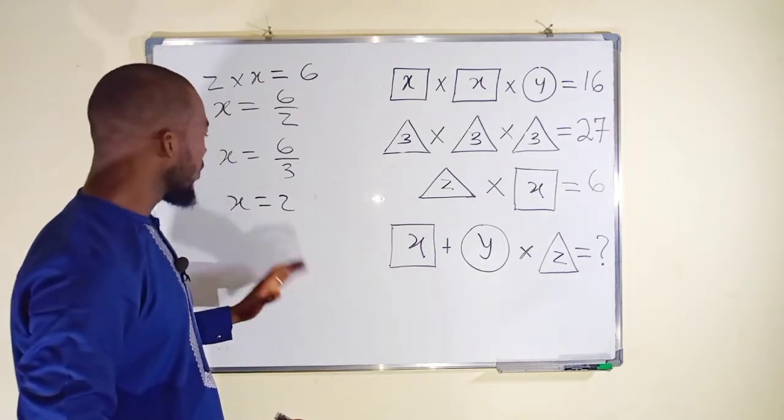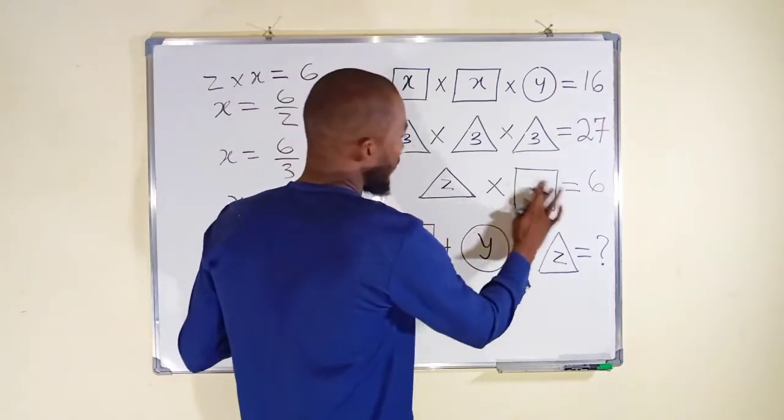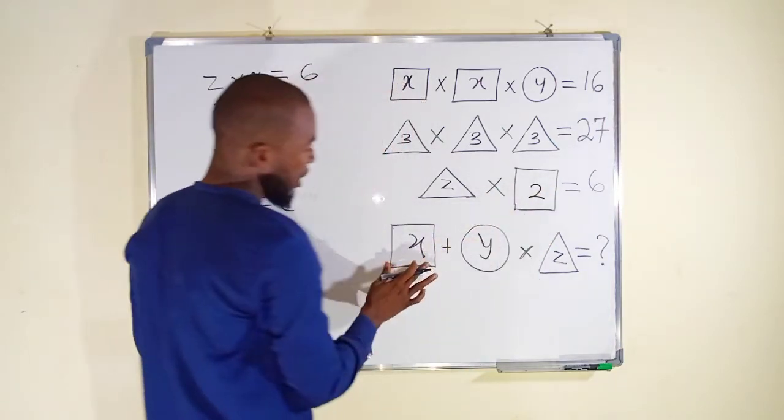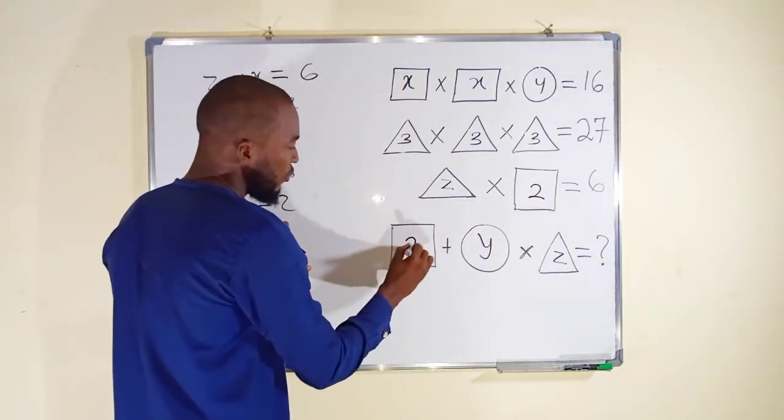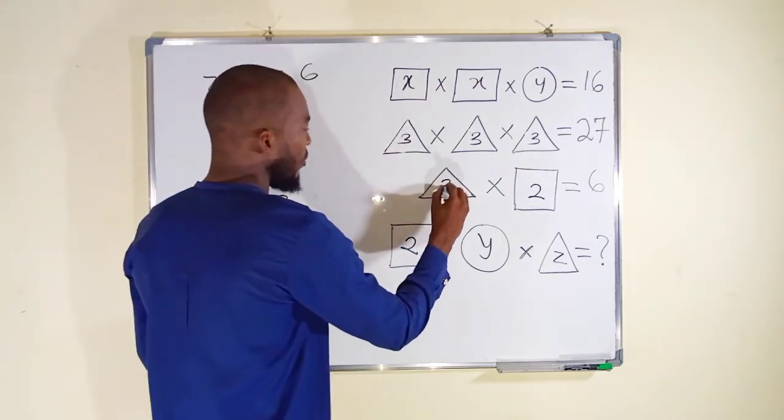So wherever we see x we can now replace it by 2. We have this to be equal to 2 and this to be equal to 2. z has already been found, this is also equal to 3.